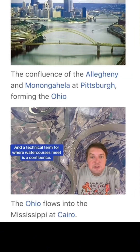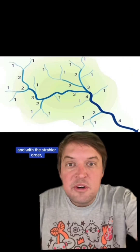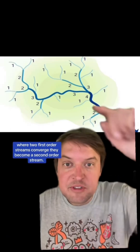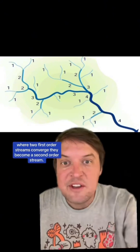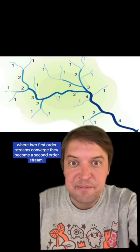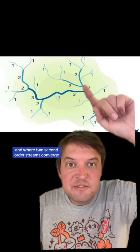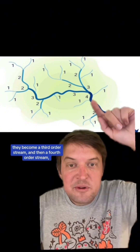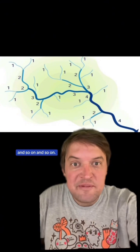A technical term for where watercourses meet is a confluence. With a Strahler order, where two first order streams converge, they become a second order stream. And where two second order streams converge, they become a third order stream, and then a fourth order stream, and so on and so on.